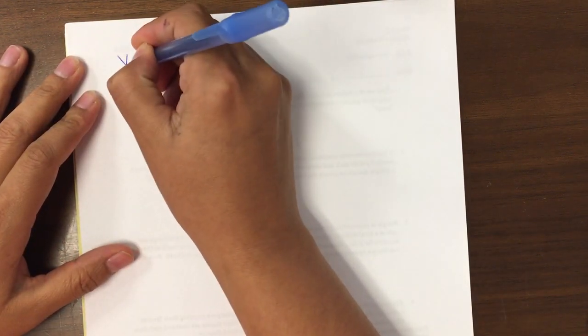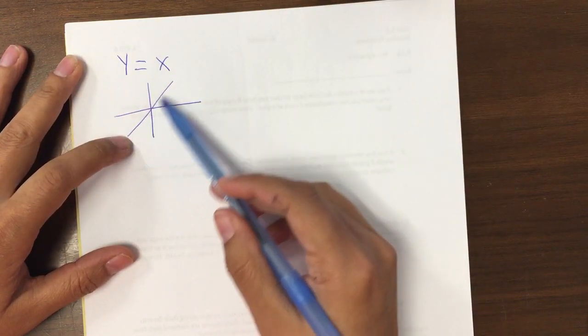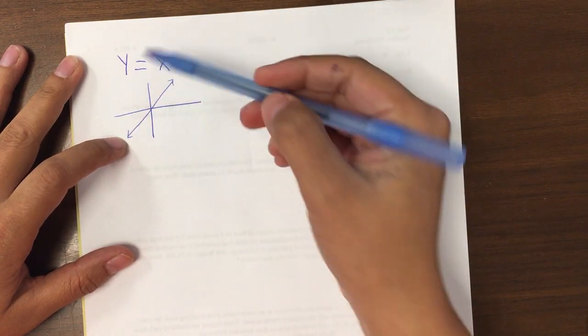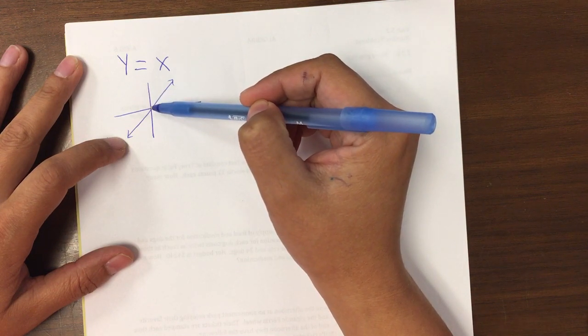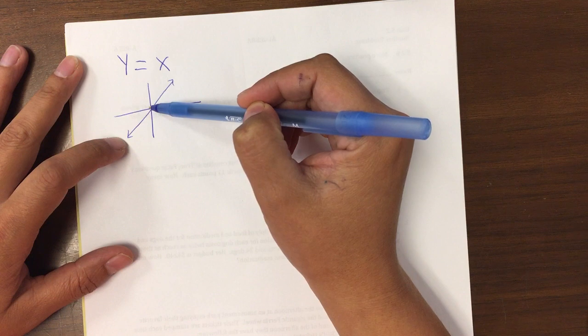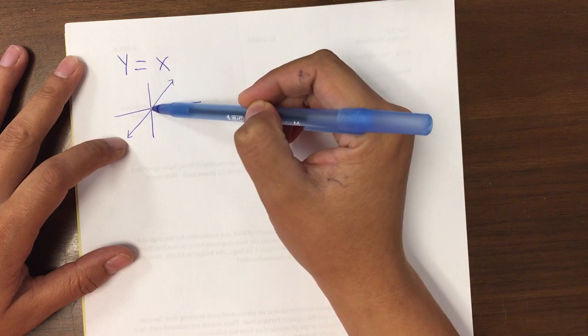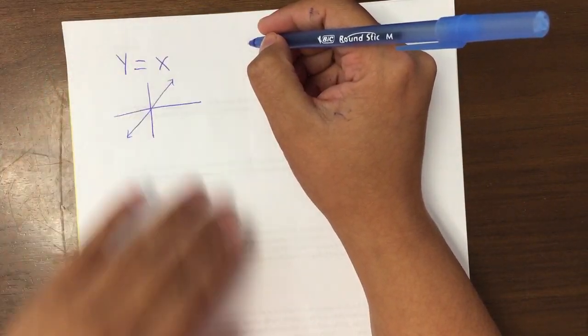Before we start, let me remind you that if we have y equals x, it just refers to this graph. It's just a line, it's a linear equation and remember that if you're adding 2, you go up outside of a parenthesis. If you're subtracting 2 outside of the parenthesis, it goes down. If you add 2 inside of the parenthesis, it goes to the left. If you subtract 2 inside of the parenthesis, it goes right. So those are just translations basically.